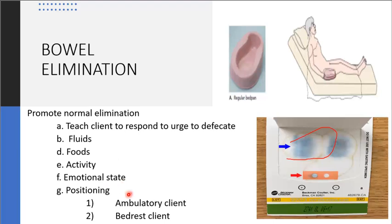In terms of positioning: for ambulatory clients, optimal posture for bowel evacuation is feet flat on the floor with hips and knees flexed — just as you would sit on a toilet. For bed-ridden clients, you always want to place the client in Fowler's position on their bedpan.